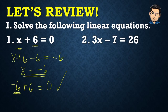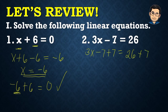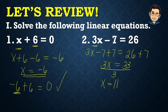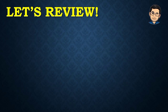Next, we have 3x minus 7 equals 26. This time we add 7 to both sides: 3x minus 7 plus 7 equals 26 plus 7. Negative 7 plus 7cancels to zero, leaving 3x equals 33. Then we divide both sides by 3 to remove the numerical coefficient. 33 divided by 3 is 11. To check: 3 times 11 is 33, and 33 minus 7 equals 26. Therefore, x equals 11 is correct.